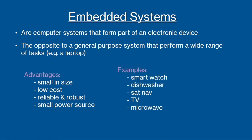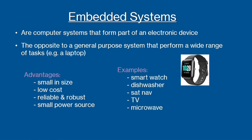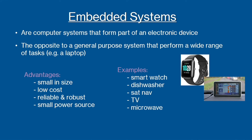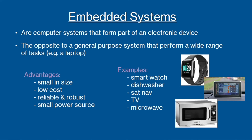Examples of embedded systems include smartwatches, dishwashers, sat navs, TVs, and microwave ovens.